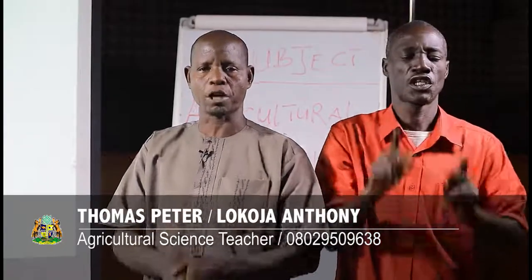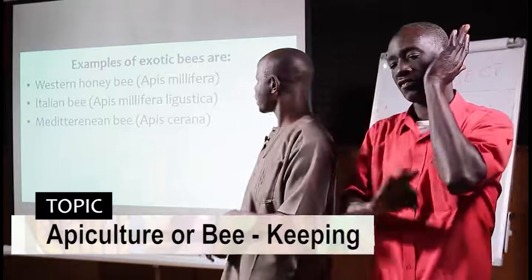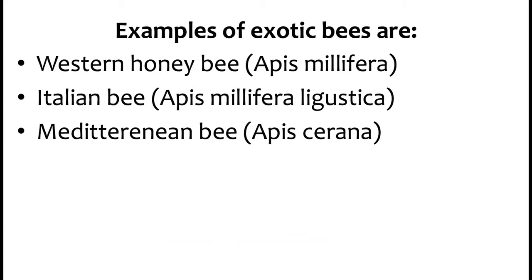Highly prolific means they can produce as much as possible. Examples of exotic bees are: the Western honey bee, botanically known as Apis mellifera; two, the Italian bee, scientifically known as Apis mellifera linguistica; and three, the Mediterranean bee, which is Apis serena.